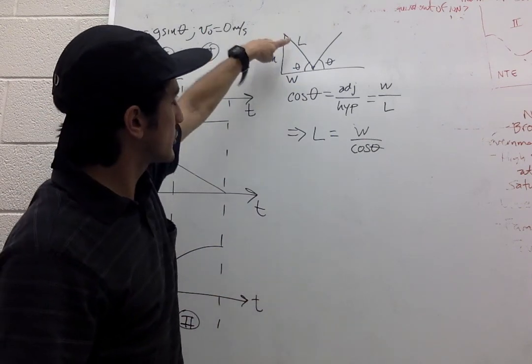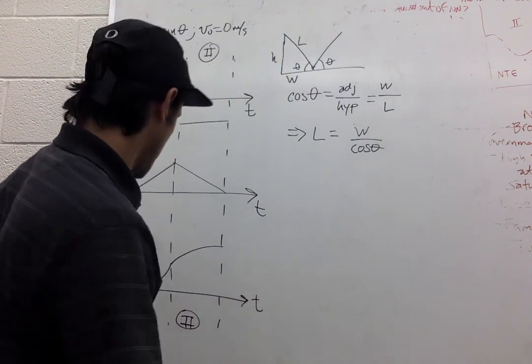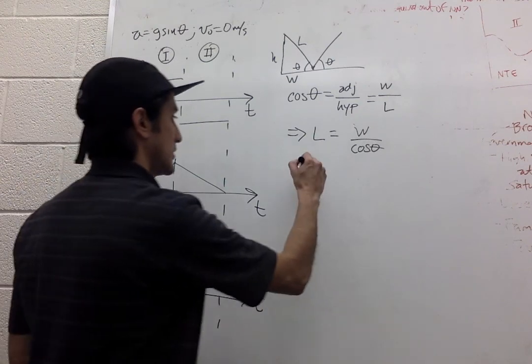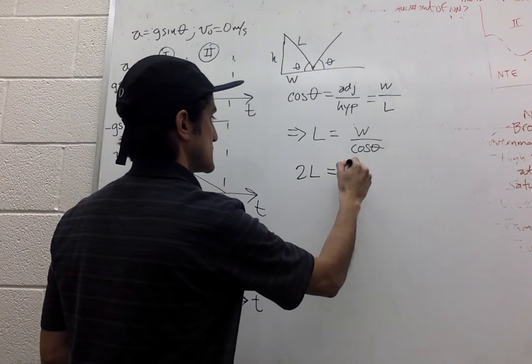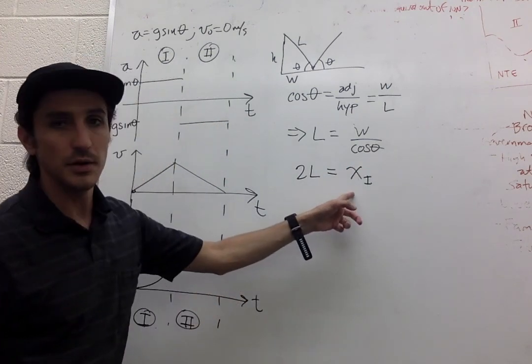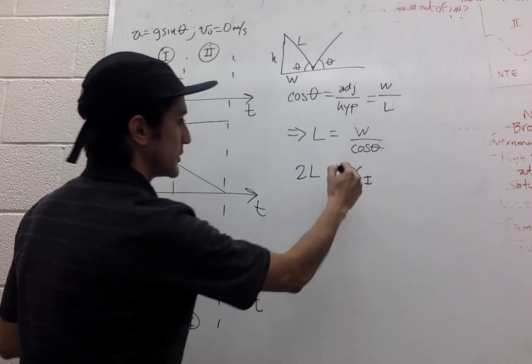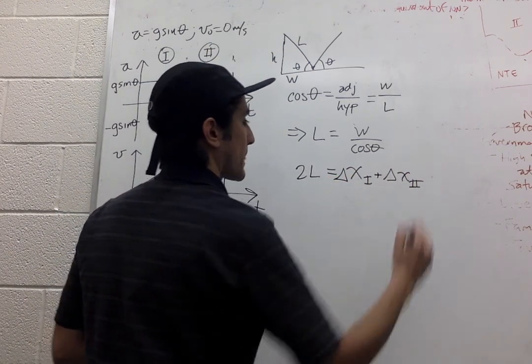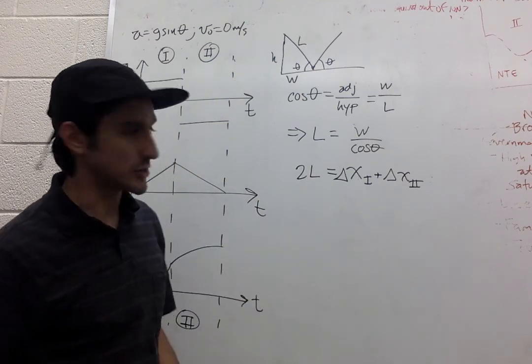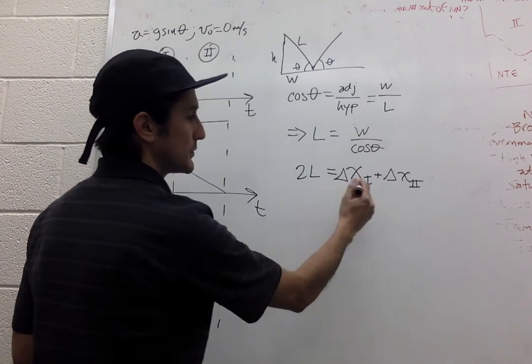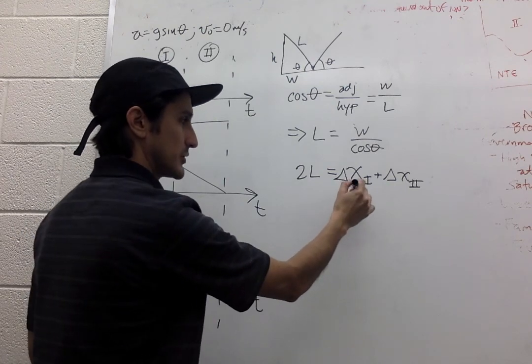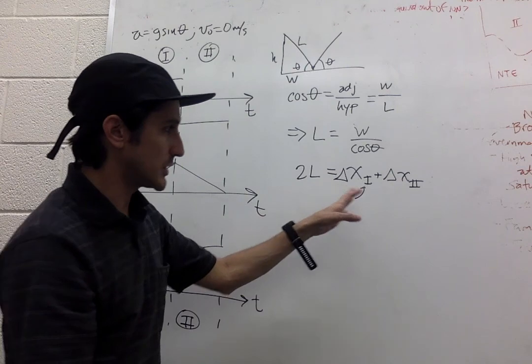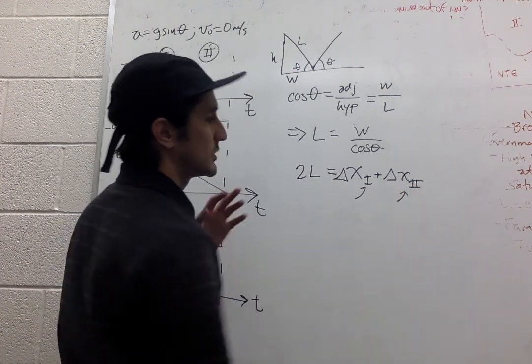The total distance is going to be 2L. So we can write that as the displacement in section 1 plus the displacement in section 2. To make it a little easier, say that this is the final position after section 1, this is the final position total.